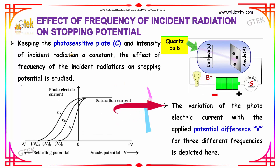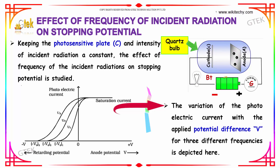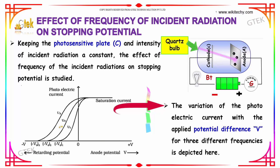Keeping the photosensitive plate C and intensity of incident radiation constant, the effect of frequency of the incident radiation on stopping potential is studied. The variation of photoelectric current with the applied potential difference V for three different frequencies is depicted here.